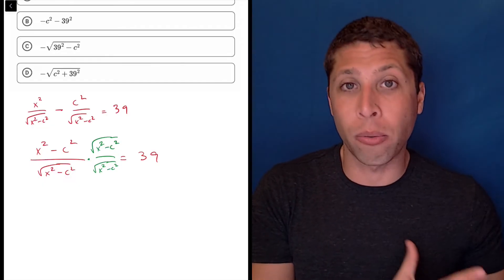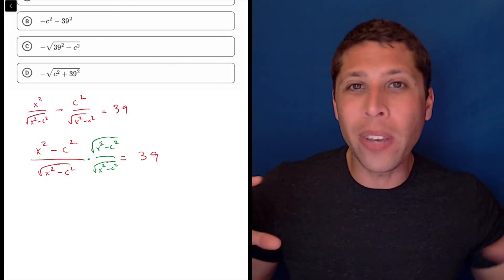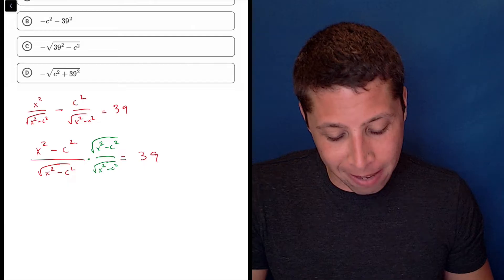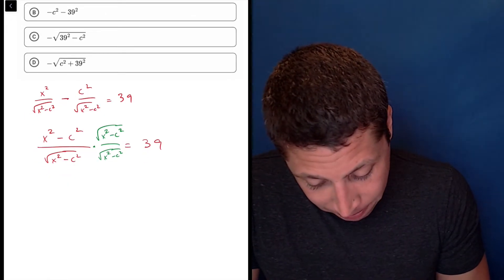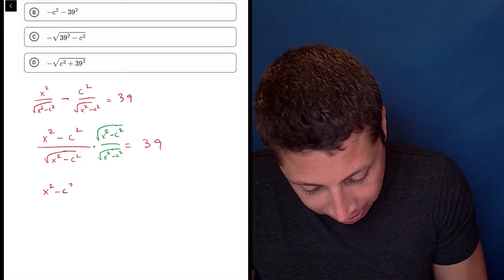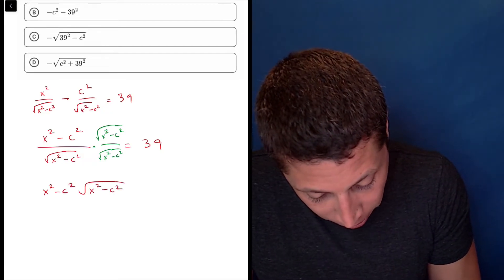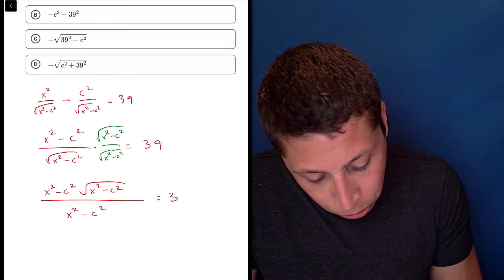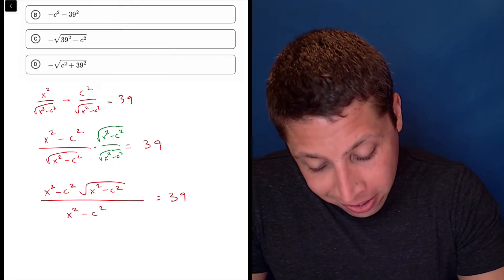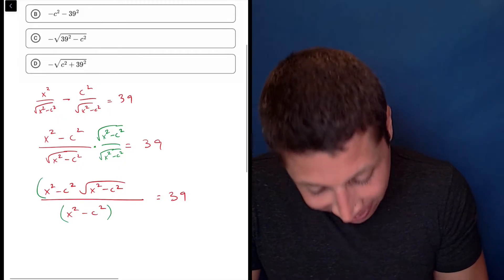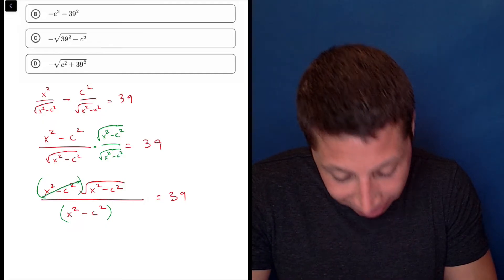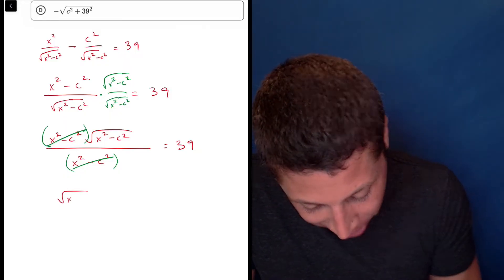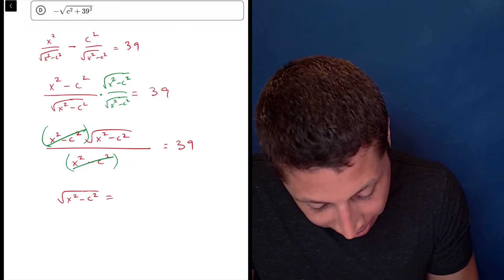So what is that going to give me? It's going to give me x squared minus c squared times the square root of x squared minus c squared over, well, again, those radicals cancel out, so that's x squared minus c squared equals 39. And now this piece occurs on both the top and the bottom, so I can cross it out. So this lets me have a much simpler x squared minus c squared is equal to 39.